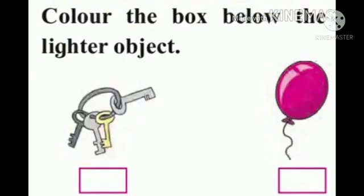Now, next example. Color the box below the lighter object. So children, see this picture. One is a bunch of keys and the other is a balloon.